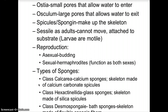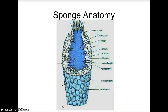Types of sponges include the class Calcaria, which are calcium sponges whose skeleton is made up of calcium carbonate spicules. The class Hexactinellida — these are glass sponges and the skeleton is made of silica spicules. And the class Demospongiae — these are bath sponges, and their skeleton is made of flexible spongin fibers.